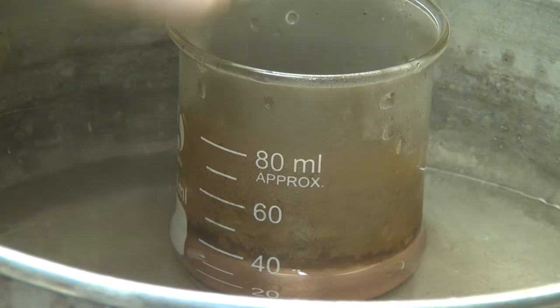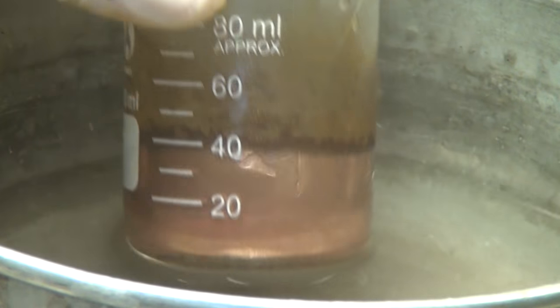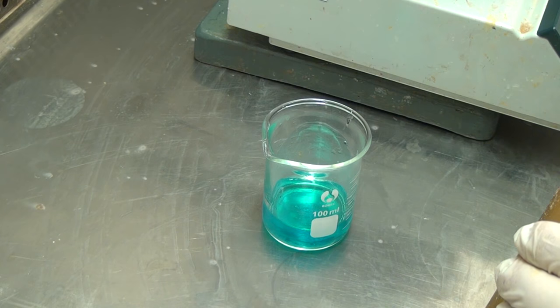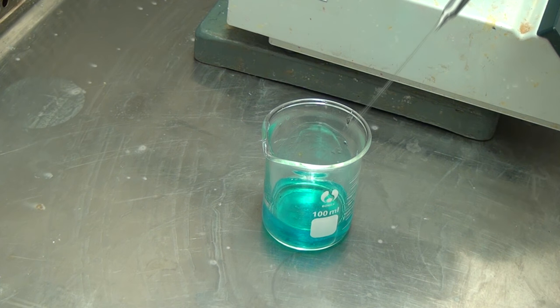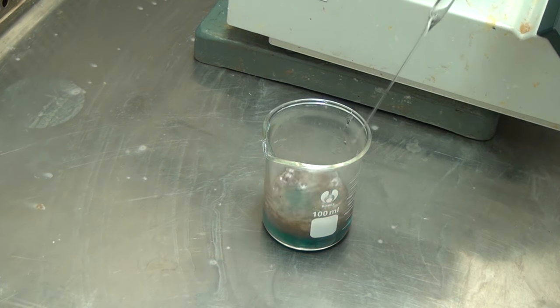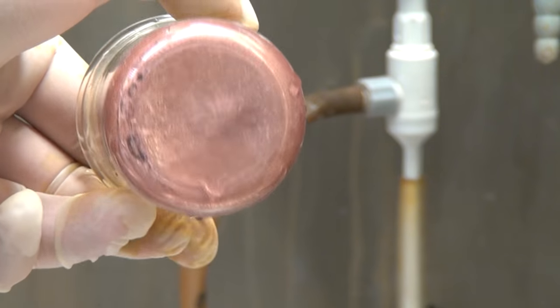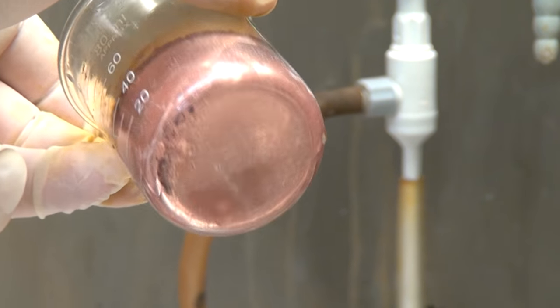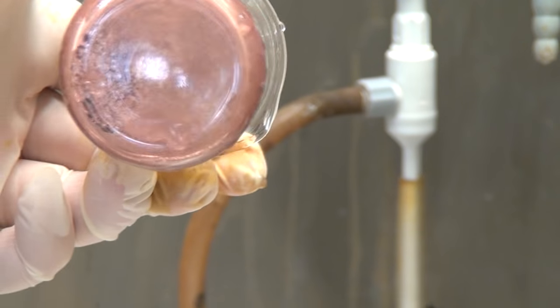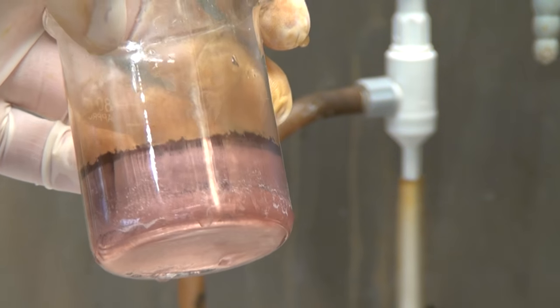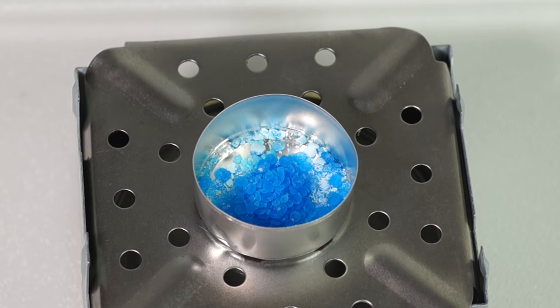There is also another interesting reaction which can be used to obtain a copper mirror. In a cup with the solution of copper sulfate, a powerful reducing agent is poured, the solution of hydrazine. The nitrogen atoms in hydrazine are being oxidized, and the copper is recovered from the solution to a metallic state, coating the walls of the glass with a sparkly, beautiful copper layer.